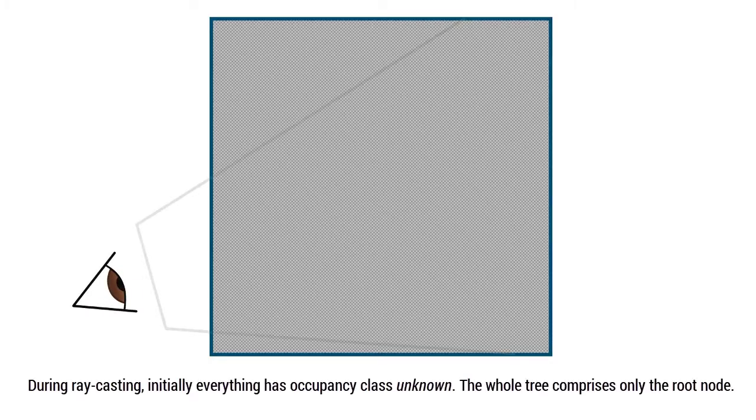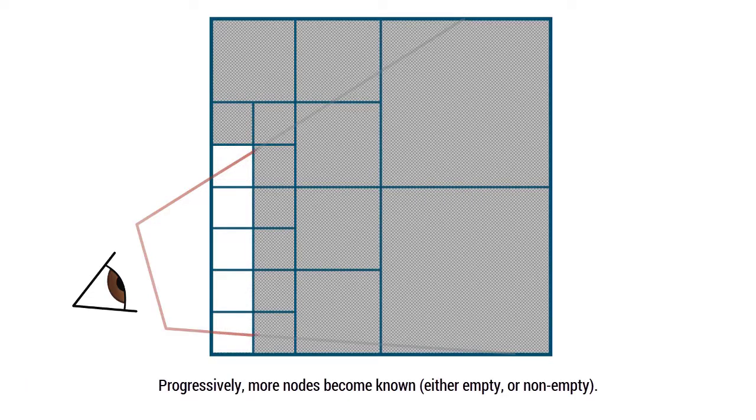A basic problem is that for each block we still need to perform culling to determine if a block is empty or non-empty. This can be a bottleneck for very large data. We therefore introduce the special occupancy class unknown, which allows us to perform culling in a delayed or lazy fashion.